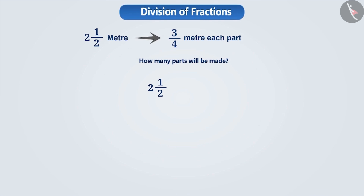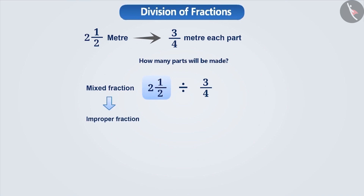Here too we have to divide two-and-a-half metres by three-fourth. Notice that two-and-a-half is a mixed fraction. In division of fractions, we have to first convert mixed fractions into improper fractions. For example, here we will write two-and-a-half as five by two. So now the division will become five by two divided by three by four.